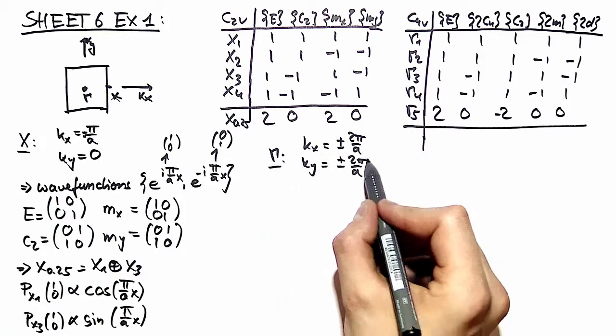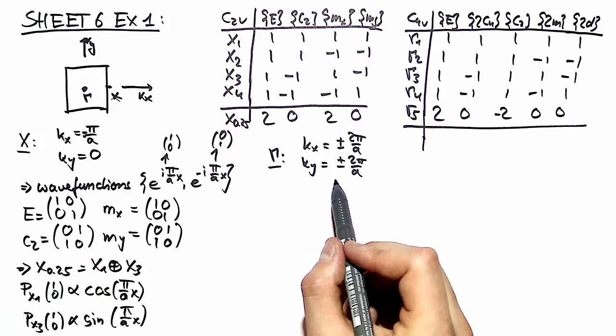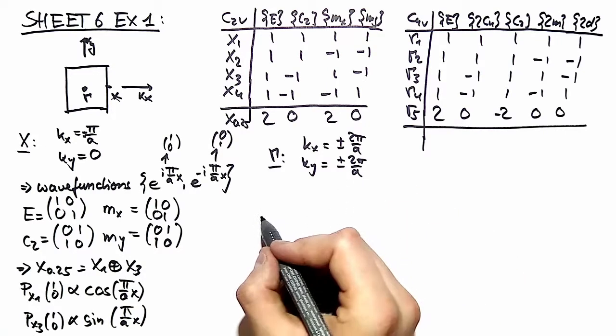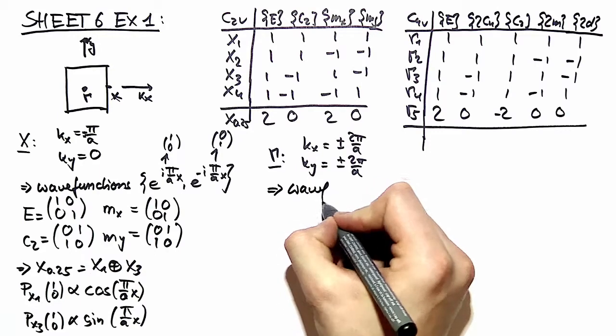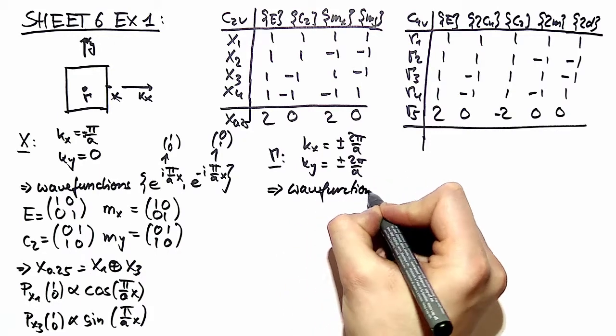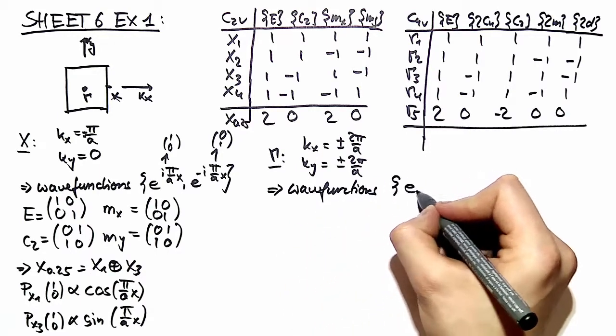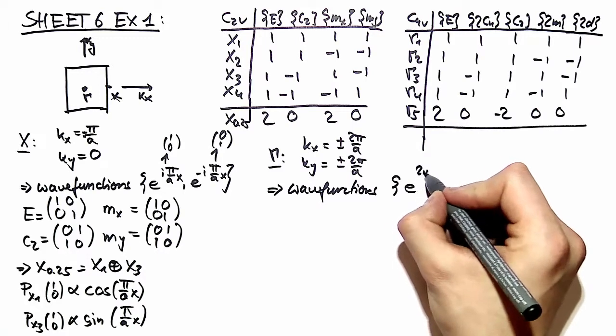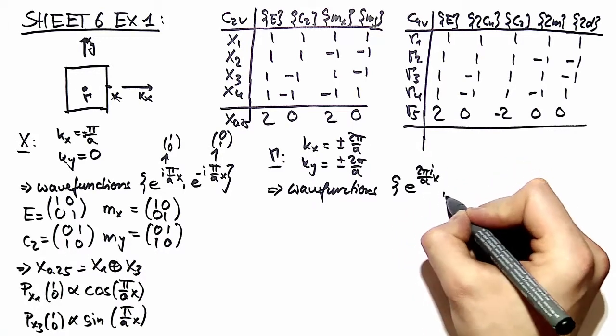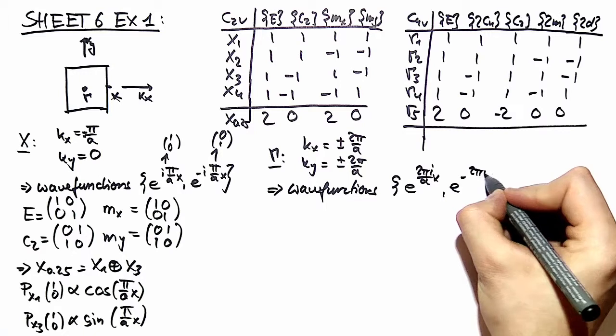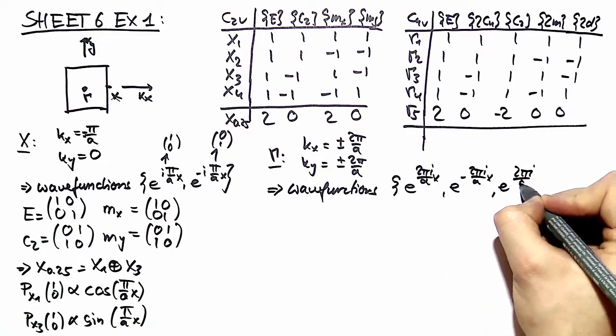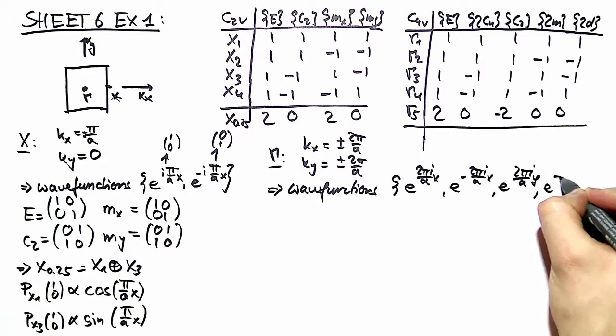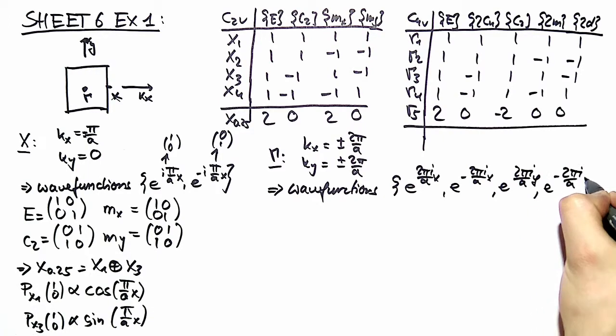Again, these four different k vectors give us four different plane wave functions, which again serve as a basis: e^(2πix/a), e^(-2πix/a), e^(2πiy/a), e^(-2πiy/a).